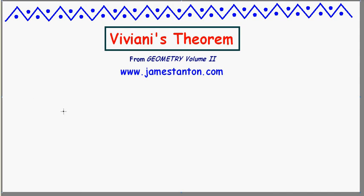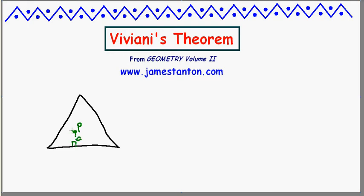Welcome! Here's a fun result attributed to Viviani, a late 17th century Italian mathematician. He claims the following: if you take an equilateral triangle and then choose any point you like inside that triangle — let's call it P — and measure its three perpendicular distances to the sides: distance A to the bottom side, distance B to the left side, and distance C to the right side, then the value A plus B plus C, the sum of the three distances, will always be the same, no matter which point you choose inside the triangle.